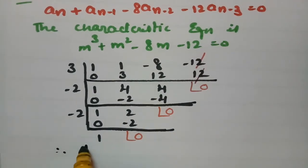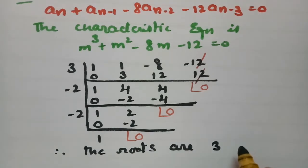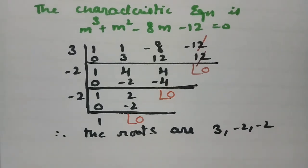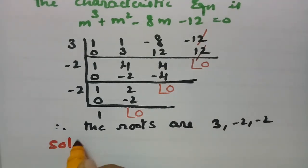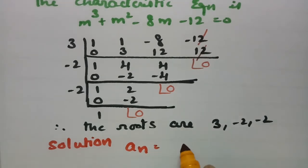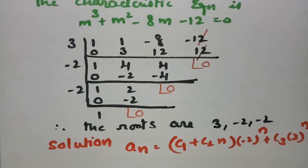Therefore the roots are 3, minus 2, and minus 2. There are 2 equal roots and 1 different root. So the general solution can be written as: a_n is equal to (c1 plus c2*n) times (minus 2)^n plus c3 times 3^n.